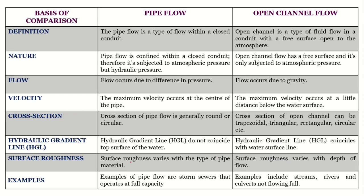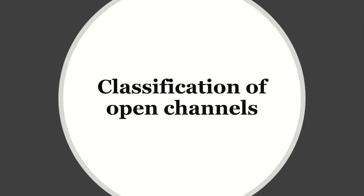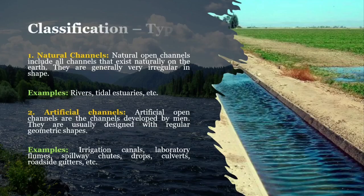For surface roughness, in pipe flow it depends on the material of the pipe used, whereas in open channel flow it depends on the depth of flow, the geometry of the channel, and the kind of channel it is. Examples of pipe flow include drainage pipelines and sewer pipelines operating at full capacity. Examples of open channel flow include all natural streams, rivers, and canals.